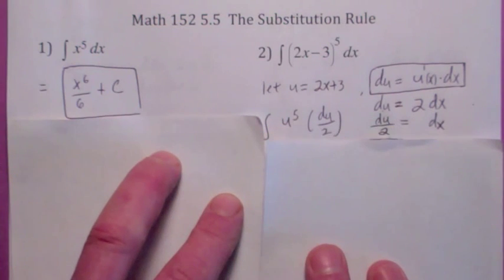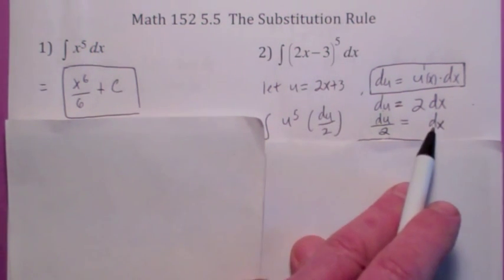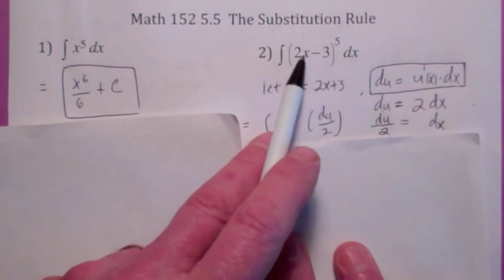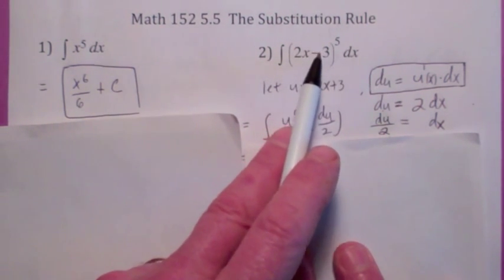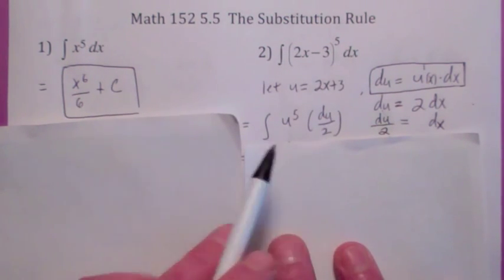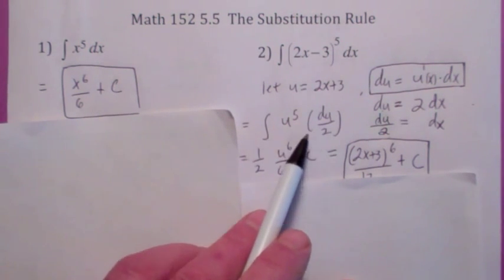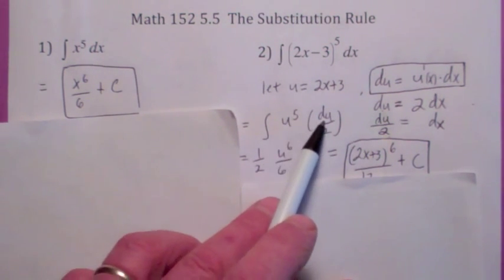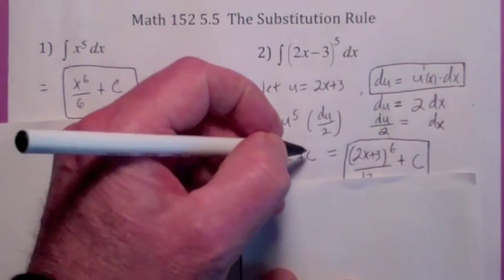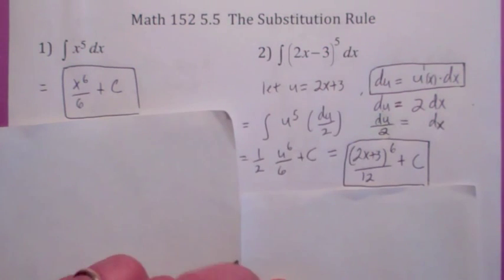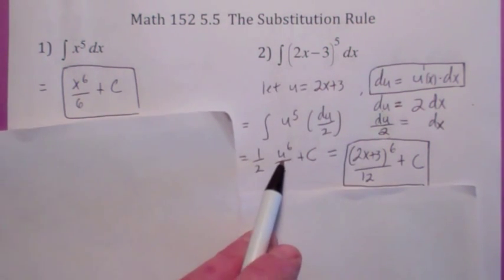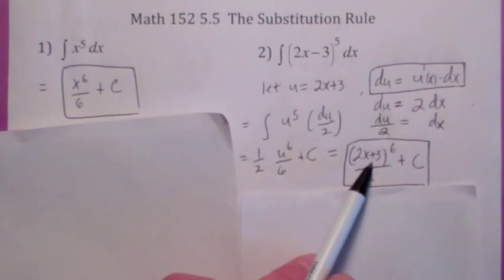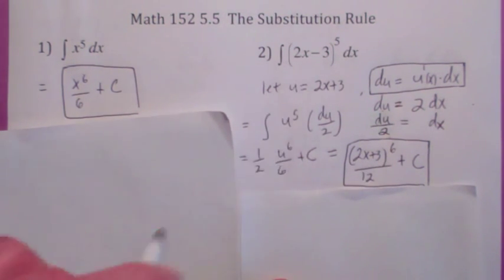You have to substitute for everything. If you substitute for dx, doesn't dx equal du over 2? So the indefinite integral can be thought of as u to the fifth, and when you substitute for dx you get du over 2. Factor out the one-half, and the indefinite integral of u to the fifth du gives you u to the sixth over 6 plus c. We always want to go back to x, so substitute back: u equals 2x minus 3. If you wanted to, you could check by differentiating — you should get (2x minus 3) to the fifth.